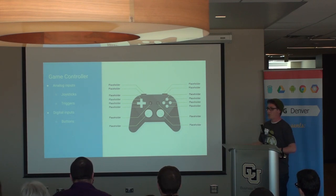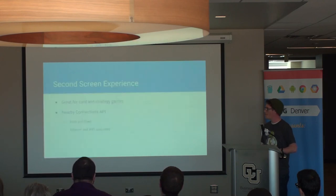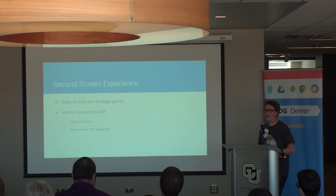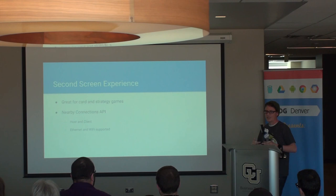Many users will use a D-pad controller for games, so you need to make sure your app supports that. As long as you're listening for key events and motion events, you can read those inputs and handle analog and digital inputs. There's also the second screen experience — if you have a strategy game or card game and you don't want everyone to see each other's cards, the TV acts as a host and using Play Services, people with their phones act as clients. They can make decisions on their phone and have everything show up on the screen when ready.